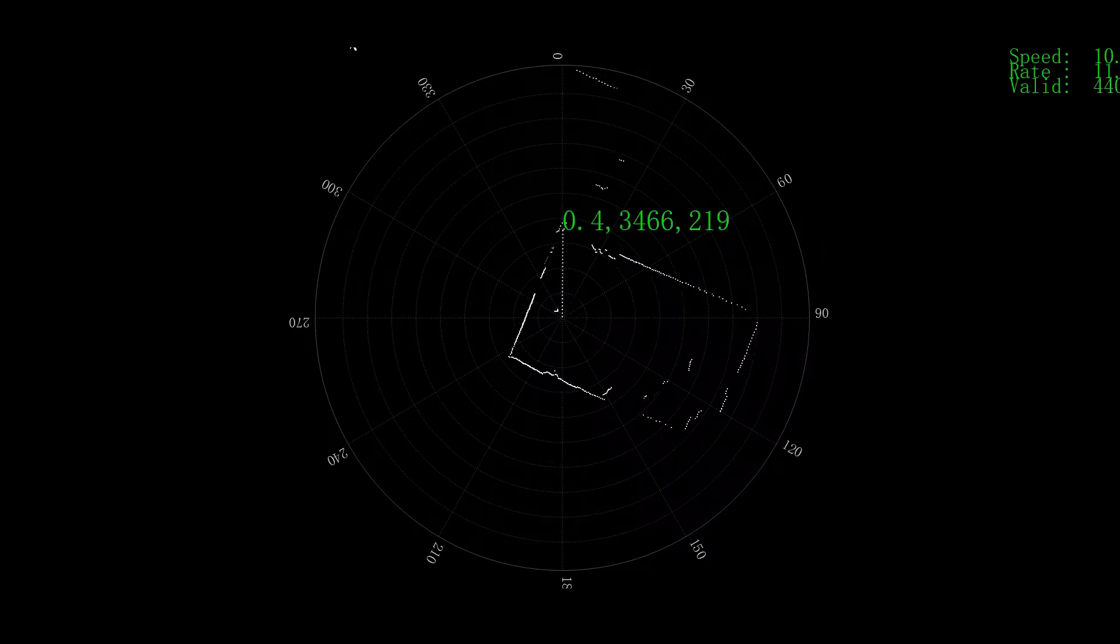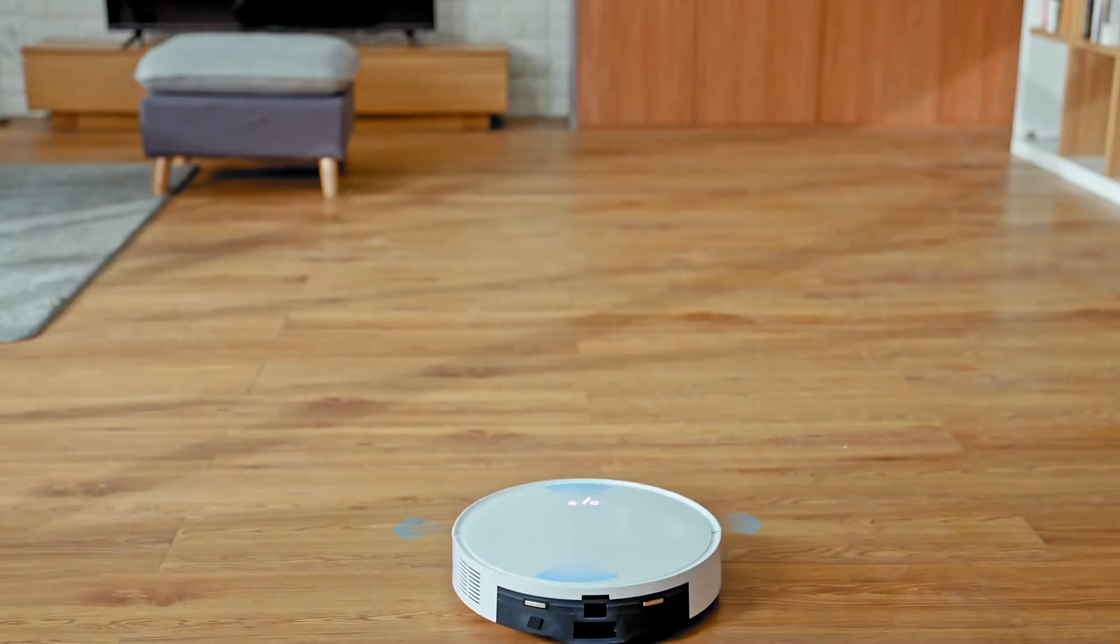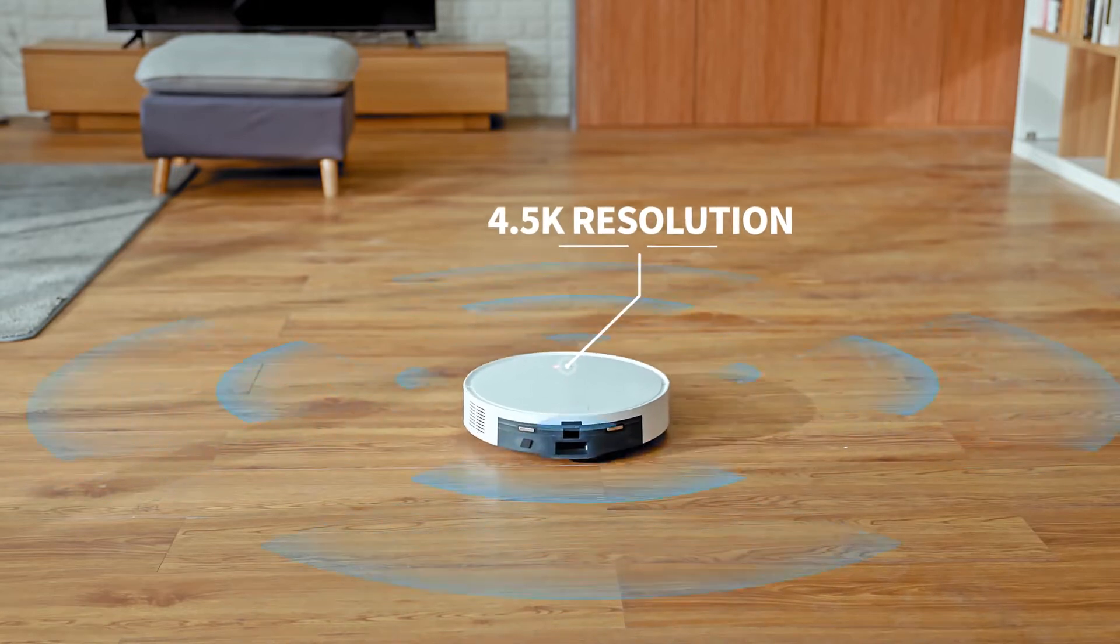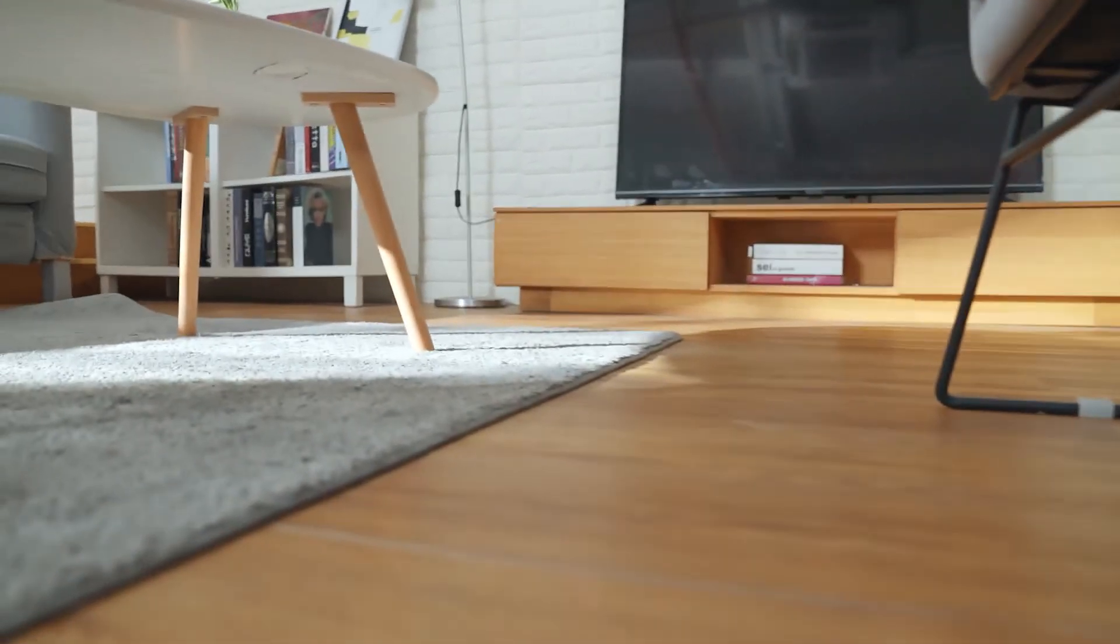With a 4500 hertz scanning frequency and 4500 data points collected per second, LD-Air LiDAR provides scan data up to 4.5K resolution, enabling robots to build maps while capturing the details of the environment and small objects.